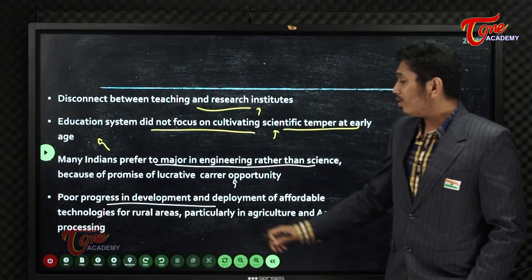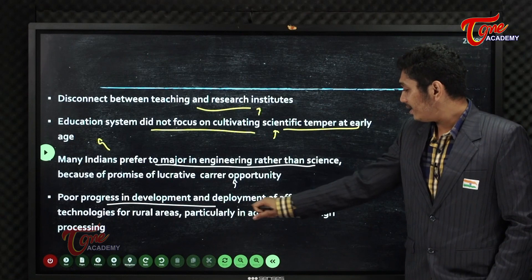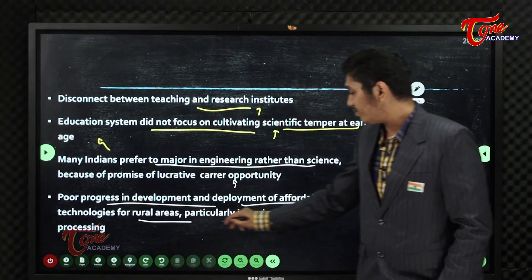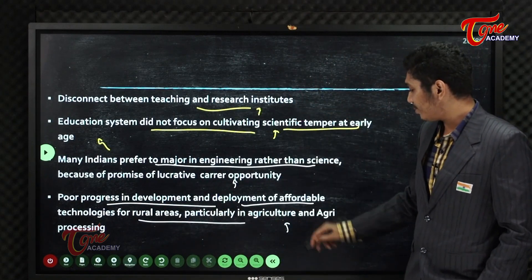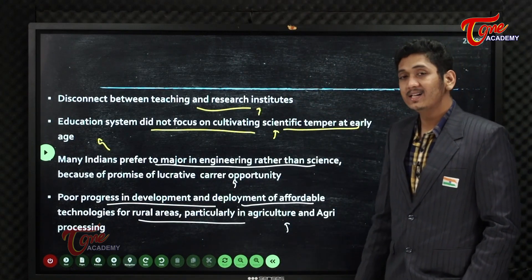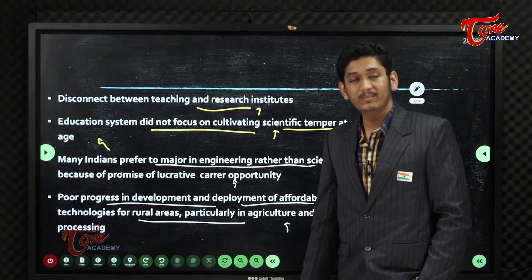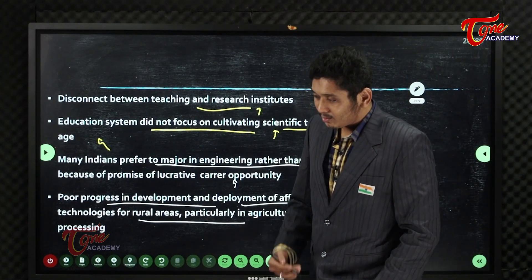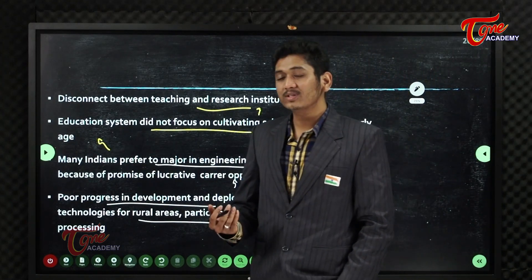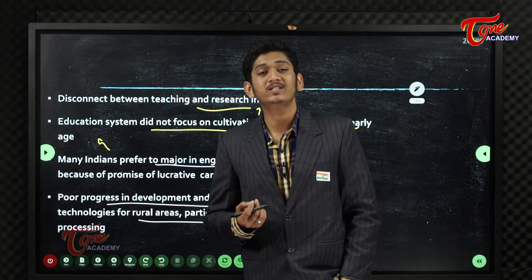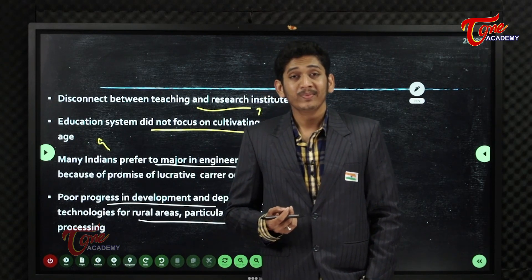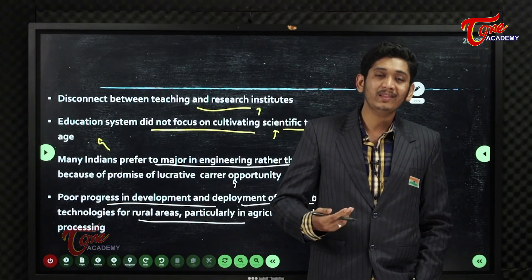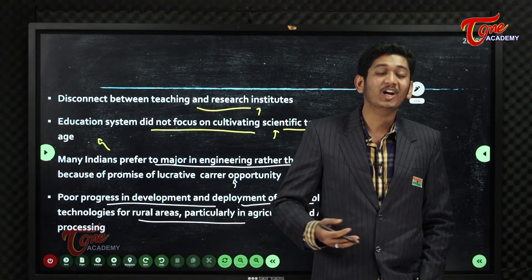There is poor progress in the development and deployment of affordable technologies for rural areas, particularly in agriculture and agriculture processing. India lives in its villages, so this is a critical challenge.